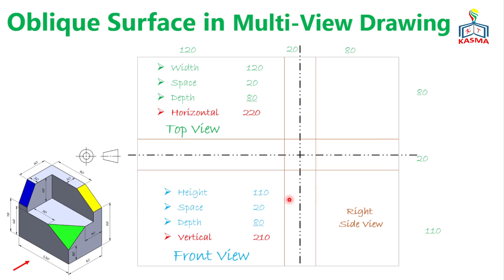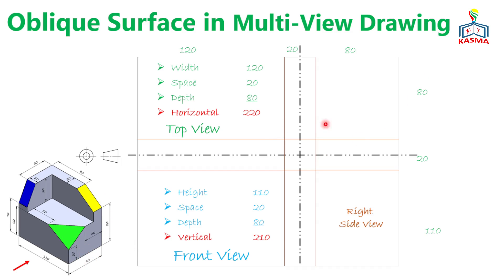For the front view, we have a total length of 120mm in the width direction, with 20mm spacing between the front view and side view, and 20mm spacing between the front view and top view. The front view has a horizontal length of 120mm and a vertical length of 60 + 50 = 110mm. The top view has the same horizontal length of 120mm and a vertical length equal to the depth of 80mm. The side view has a height of 110mm and a horizontal length of 80mm.